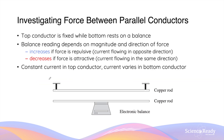A very similar method using the electronic balance can be used to investigate the force between a pair of parallel current-carrying conductors. The top conductor is fixed, while the bottom conductor is resting on an electronic balance and is free to move. The balance reading will change depending on the magnitude and direction of the force between the two straight conductors. If the current passing through the two conductors are flowing in the opposite direction, then there will be a repulsive force created between them. And since the top conductor is fixed, this will cause the bottom conductor to experience a downward force, which will also be applied onto the balance, causing the reading on the balance to increase.